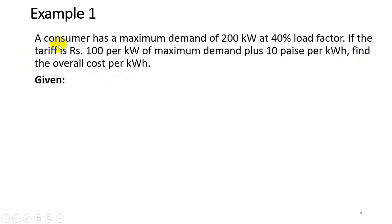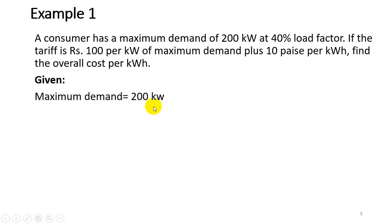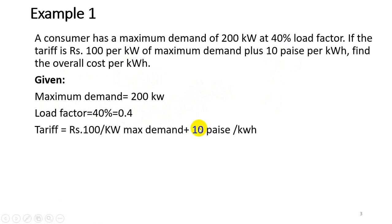Going through the given data: maximum demand is 200 kilowatt, load factor is 40% which converts to 0.4, and the tariff is rupees 100 per kilowatt of maximum demand plus 10 pies per kilowatt hour. We want to find the overall cost per kilowatt hour, so we need to convert from maximum demand basis to a kilowatt hour basis.